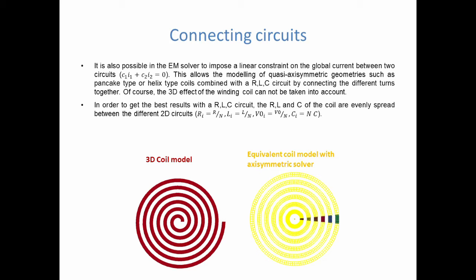Well, luckily, it's also possible in the EM solver to impose a linear constraint on the global current between two circuits. This allows the user to basically say that the current that comes out of one circuit is the same current which needs to come in in the next circuit, and so forth. So, he can set up independent RLC circuits and then connect them all. Pay attention though, the values taken by RLC for each circuit cannot be the same as for the 3D circuit. Rather, each winding will have a portion of the total 3D circuit. So, in order to get the best results, the user can spread evenly the R, L and C values over each winding for each circuit.